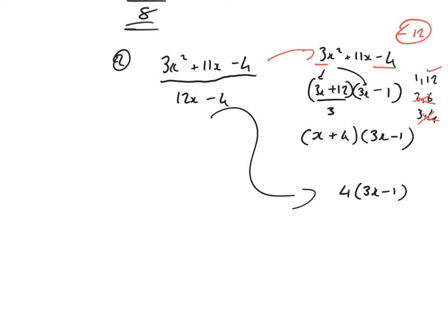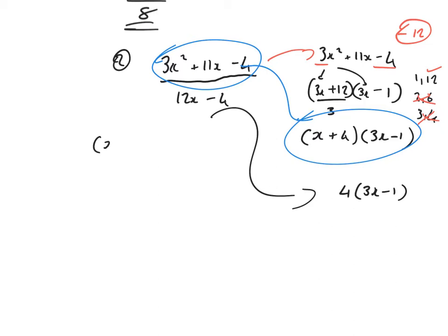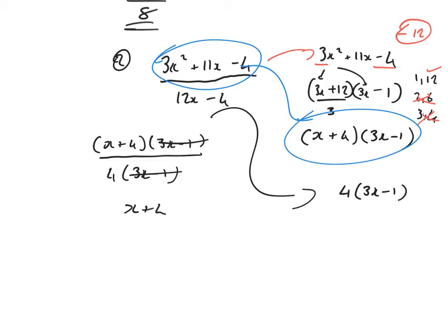Let's bring it all together. The top is going to be x plus 4 bracket 3x minus 1, and the bottom is 4 bracket 3x minus 1. The (3x minus 1) terms cancel, leaving a final answer of x plus 4 over 4.